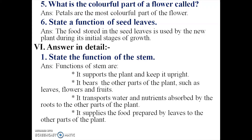Second function: the stem bears the other parts of the plant such as leaves, flowers, and fruits. Third function: it transports water and nutrients absorbed by the roots to the other parts of the plant. Roots absorb water and minerals from the soil, and the stem transfers them to other parts.